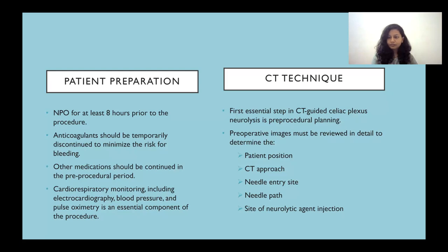Patient preparation includes nil per oral for 8 hours prior to the procedure, anticoagulants temporarily discontinued to minimize the risk of bleeding, other medications continued, and monitoring of vitals. The first step in CT-guided celiac plexus neurolysis or block is pre-procedural planning, wherein we plan the patient position, the CT approach, needle entry site, needle path, and site of neurolytic agent injection.